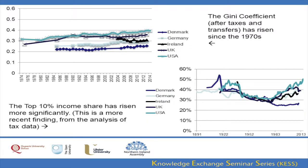The next diagram looks at selected OECD countries — Denmark, Germany, Ireland, the UK and the United States — illustrating the rise from the 1970s of the net Gini coefficient. There's an overall upward curve, with some ups and downs particularly in the UK and Republic of Ireland, but on the whole there is an upward trend across all OECD countries.